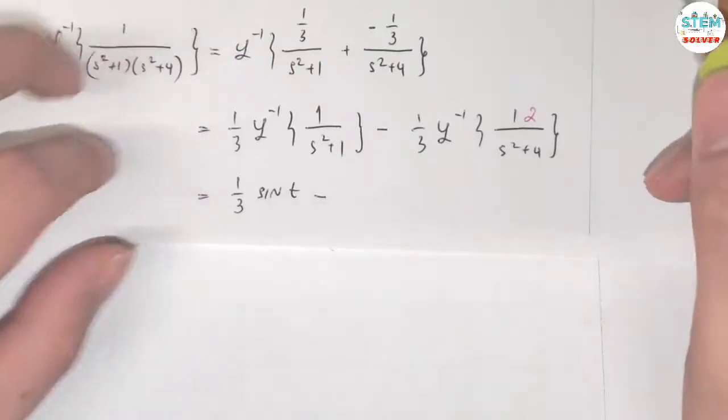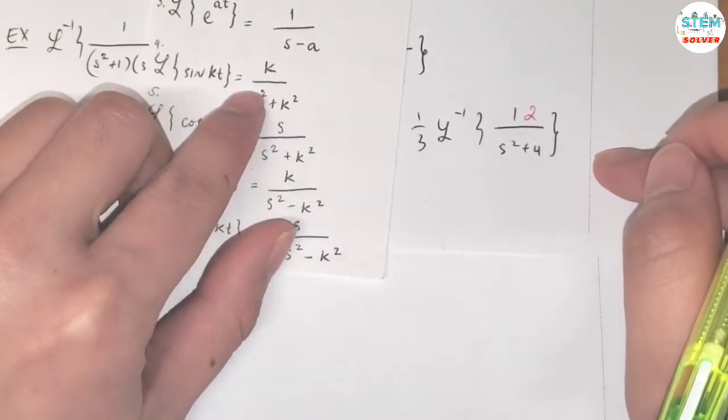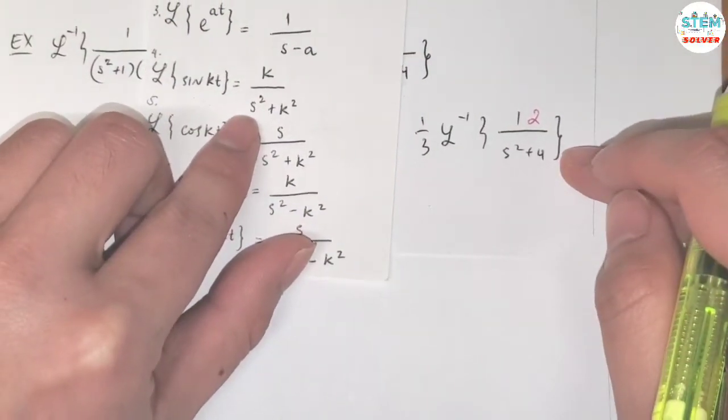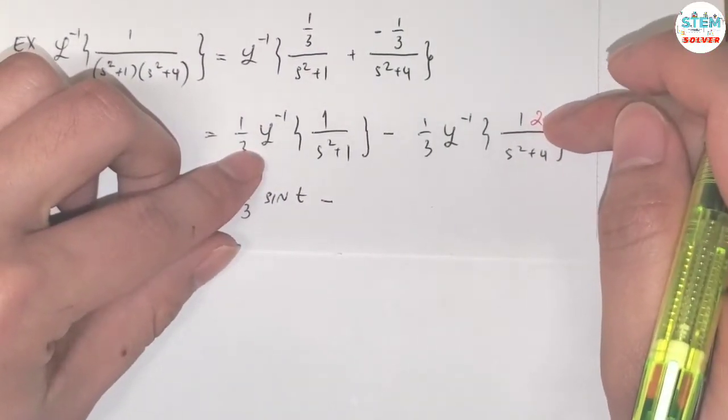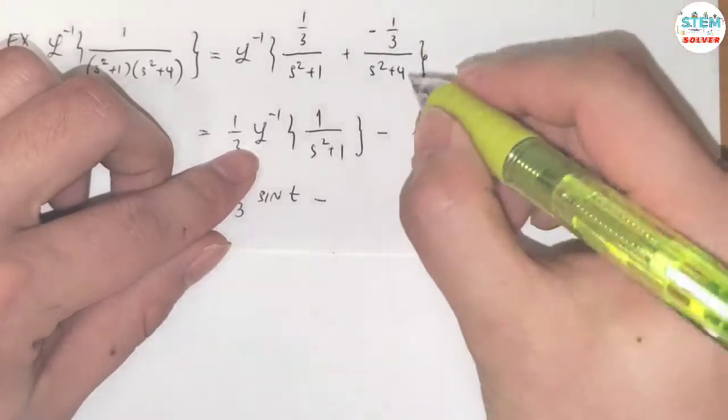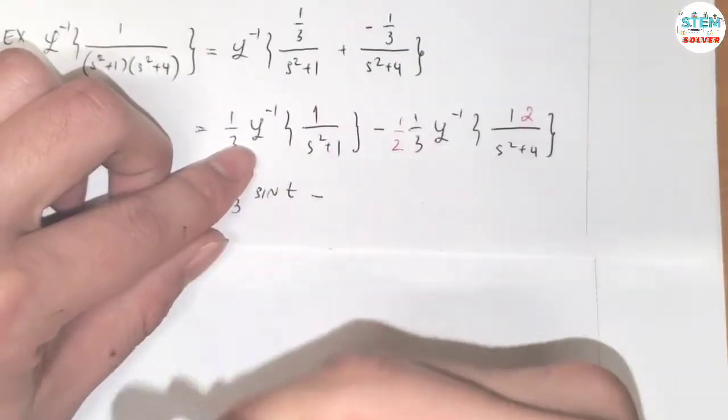So the formula says that for a sine, we have to have k over x squared plus k squared, and our k is 2, so we need to have the 2 on top, but it doesn't have the 2 on top initially. Because this is what I just put in, then I have to divide by 1 half to compensate, okay?